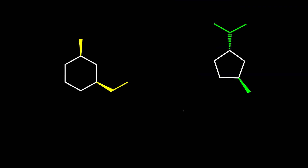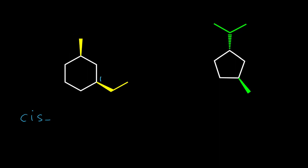In cycloalkanes we also have cis and trans isomerism. When we have cis and trans isomerism for two groups on a cycloalkane, we need to write cis or trans before the beginning of the name. In this first example, these two groups are both on the same side — both are wedge — so these two groups are cis. We write cis before the name, then number the ring. Because we have only two groups, we choose alphabetical order: 1-ethyl, then 3-methyl, then cyclohexane: cis-1-ethyl-3-methylcyclohexane.